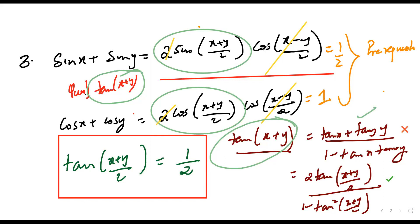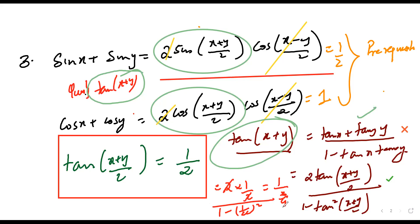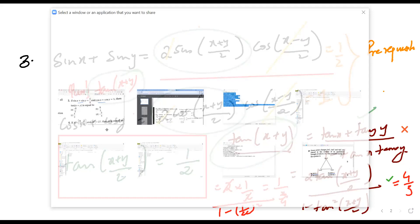Substituting: tan(x+y) = 2·(1/2) / (1 - (1/2)²) = 1 / (1 - 1/4) = 1 / (3/4) = 4/3. The answer is 4/3, which is option C.